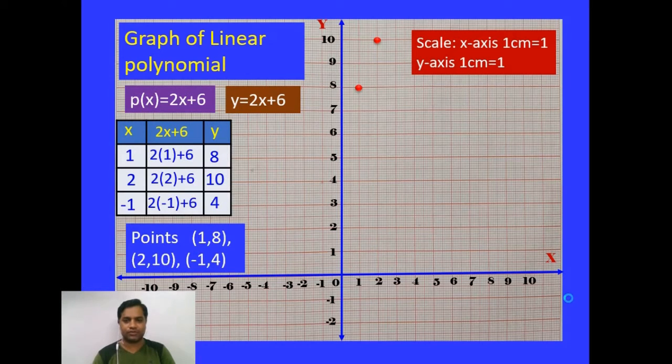Now finally, (-1, 4). That point will be located at that place. Here it is: (-1, 4).